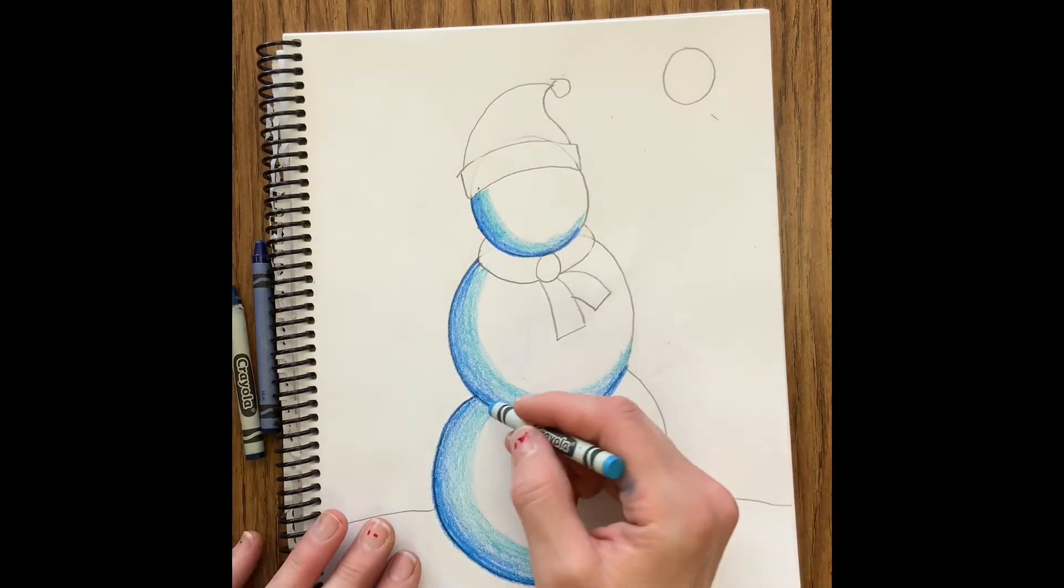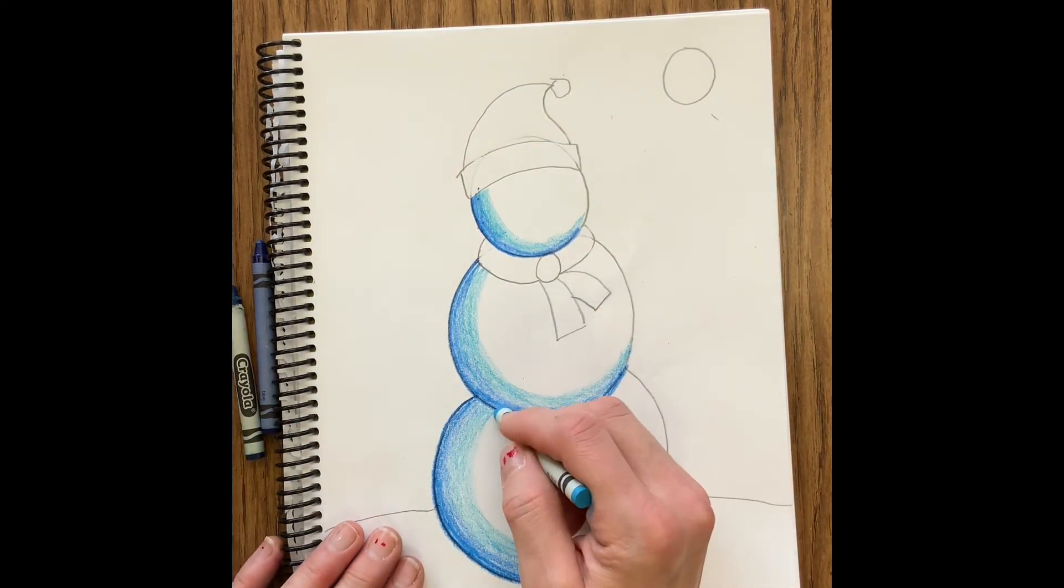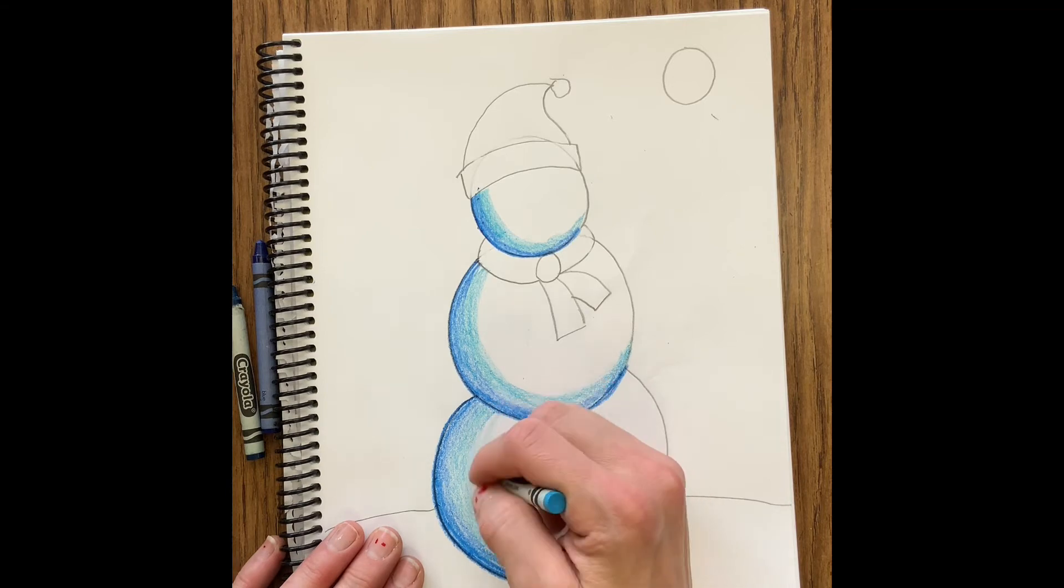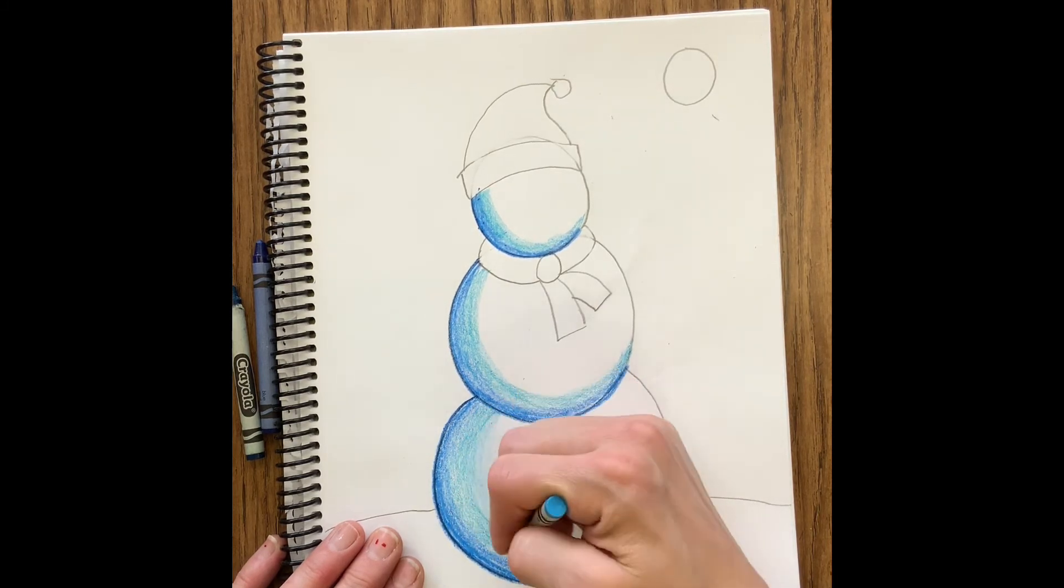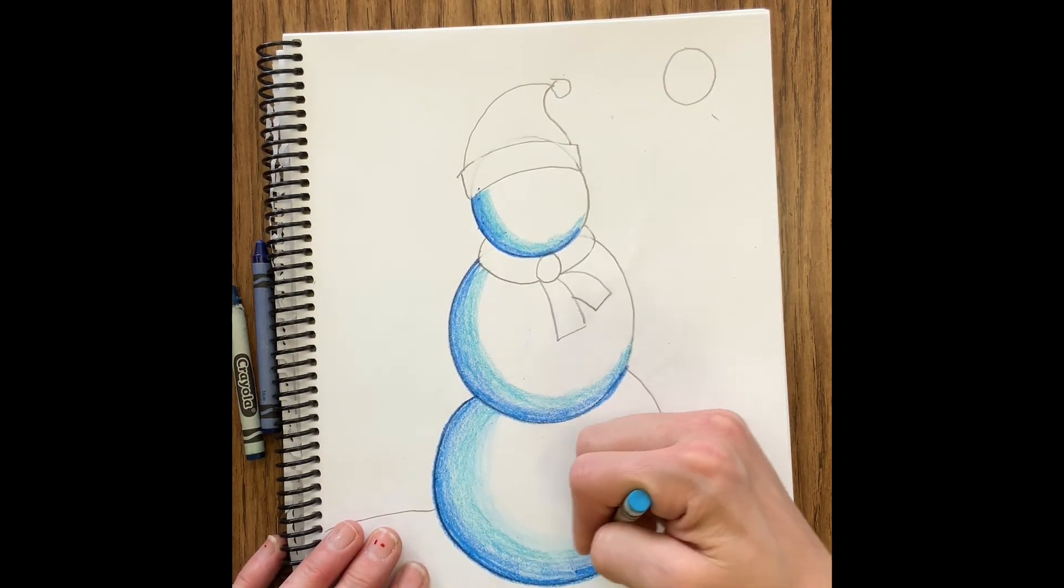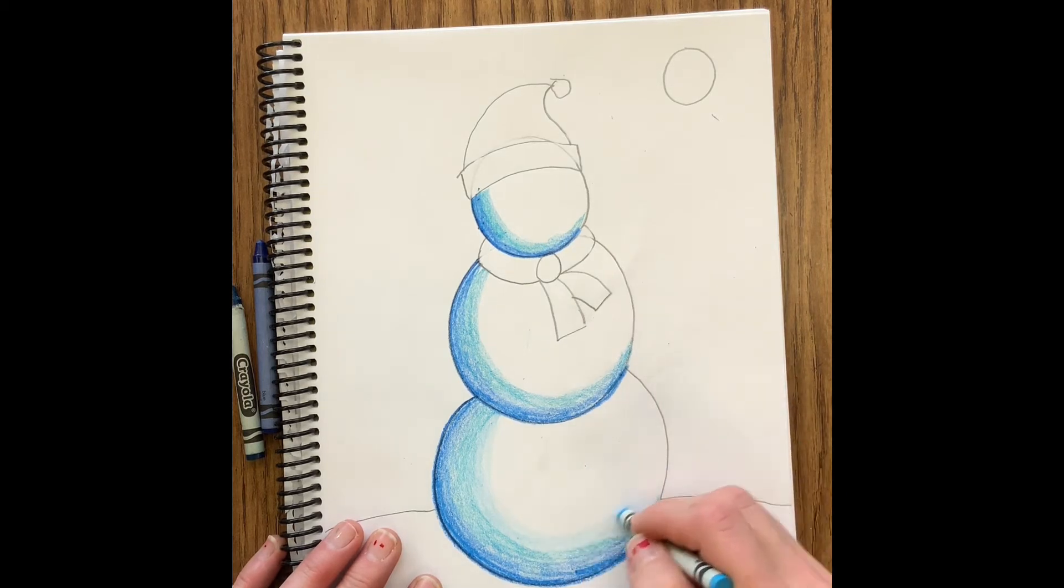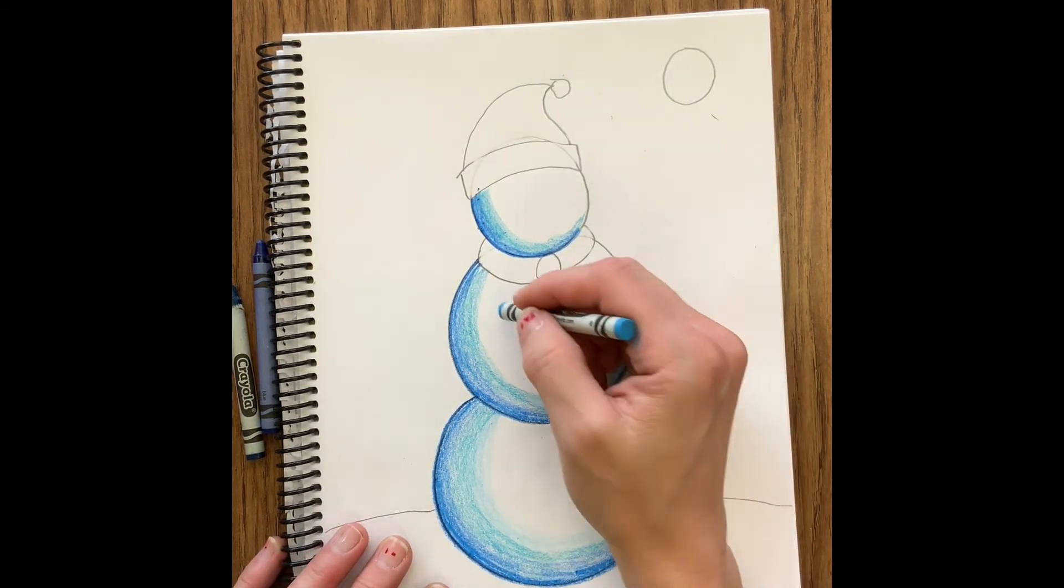The last thing I'm going to do is switch to my lightest color, which is a sky blue. Again I'm coloring over that blue green a little bit, pretty hard all the way to the blue even, and then lightly coloring out towards the middle of that snowball.